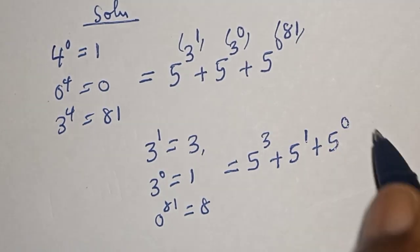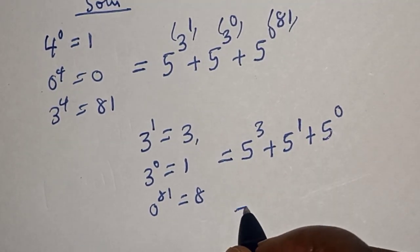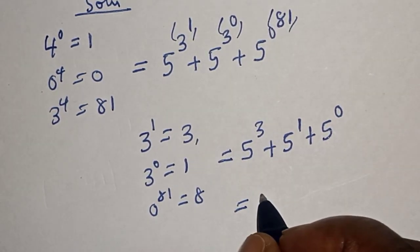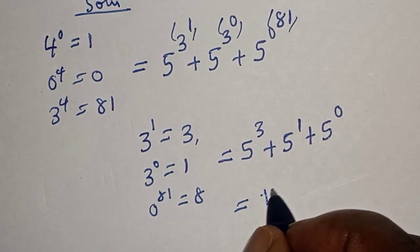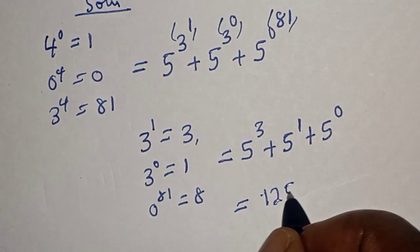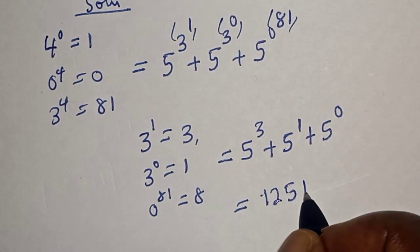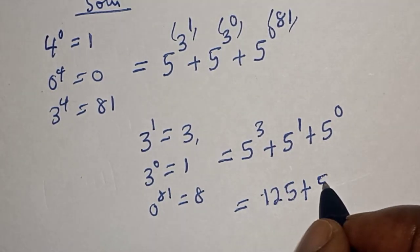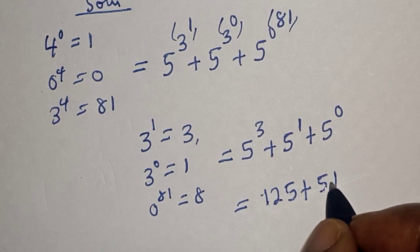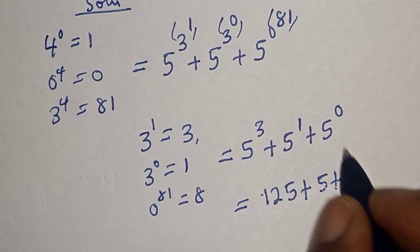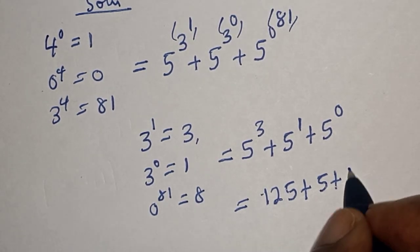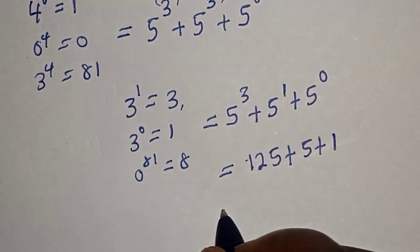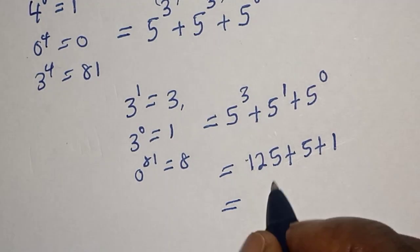This is equal to five raised to power three, plus five raised to power one, plus five raised to power zero. Five raised to power three is 125, plus five raised to power one is 5, plus five raised to power zero is 1.